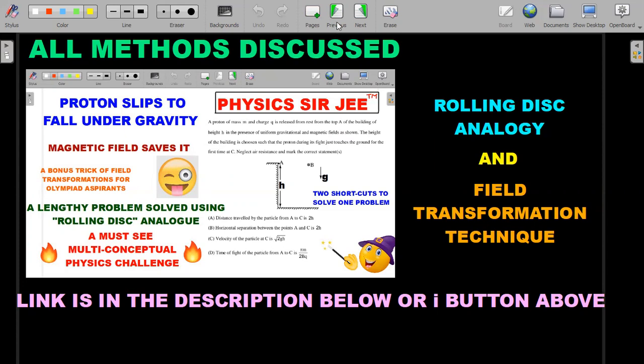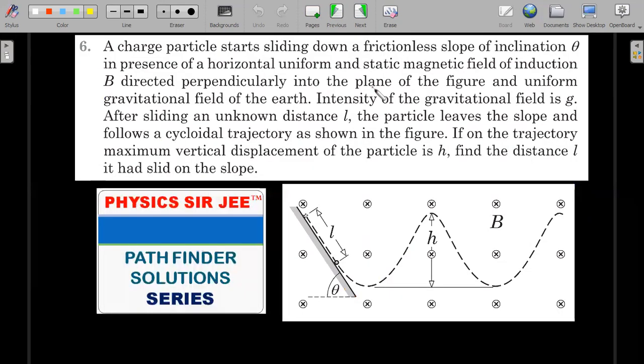Let's see the formal wording of the question from the Pathfinder. A charged particle starts sliding down a frictionless slope of inclination theta in presence of a horizontal uniform and static magnetic field of induction B directed perpendicularly into the plane of the figure and uniform gravitational field of the earth.